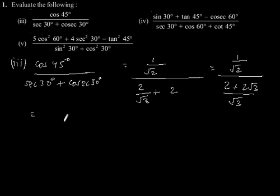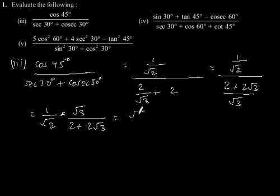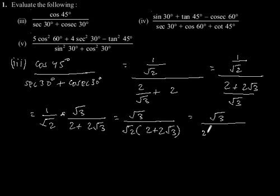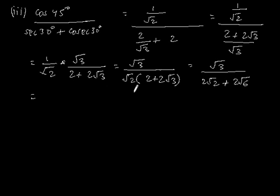This equals 1/√2 · (√3/2) + 2√3, which equals √3/(√2 · 2) + 2√3. This simplifies to √3/(2√2 + 2√6).